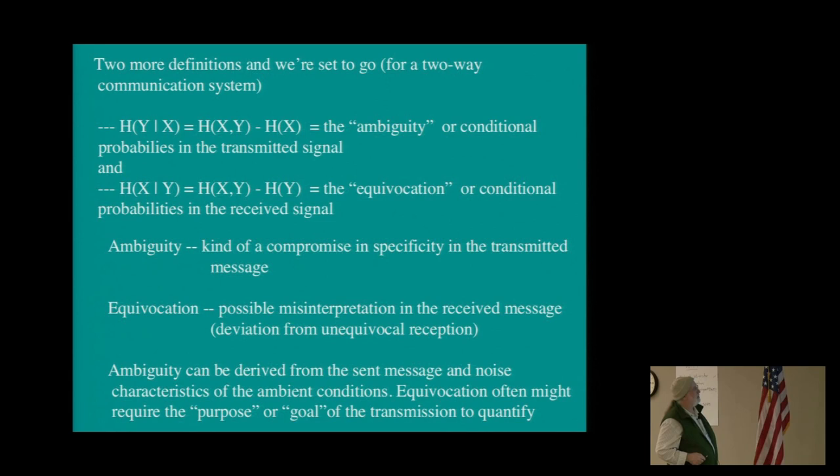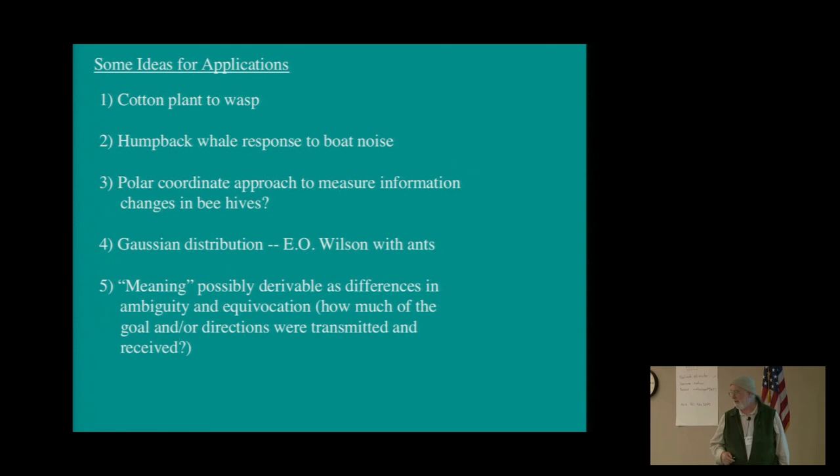We also have something called the ambiguity, which is conditional probabilities in the transmitted signal. So if you're kind of ambiguous about your transmission, then you're introducing non-clarity. It's how sure are you that that's what was transmitted. And then the equivocation is how sure are you that what you received was what was transmitted. So these are uncertainties based on mathematical definitions of conditional probabilities. Yes, exactly what they are. Yeah, sender and receiver noise. You can think of it that way. How am I doing on time? Already? I'll finish up in like three minutes.